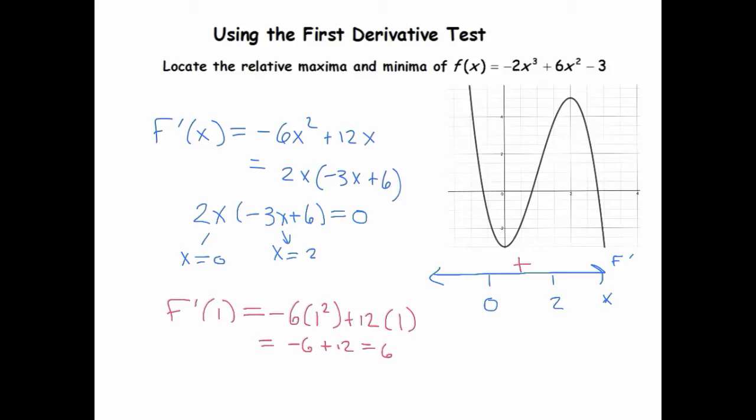And let's plug in a number to the right of 2, f prime of, let's say, 3. And that's going to be, I'm going to plug this one into the second version then. 2 times 3 times negative 3 times 3 plus 6. And this ends up being a positive times negative, because negative 3 times 3 is negative 9. So this is negative 3 times 6, which is negative.